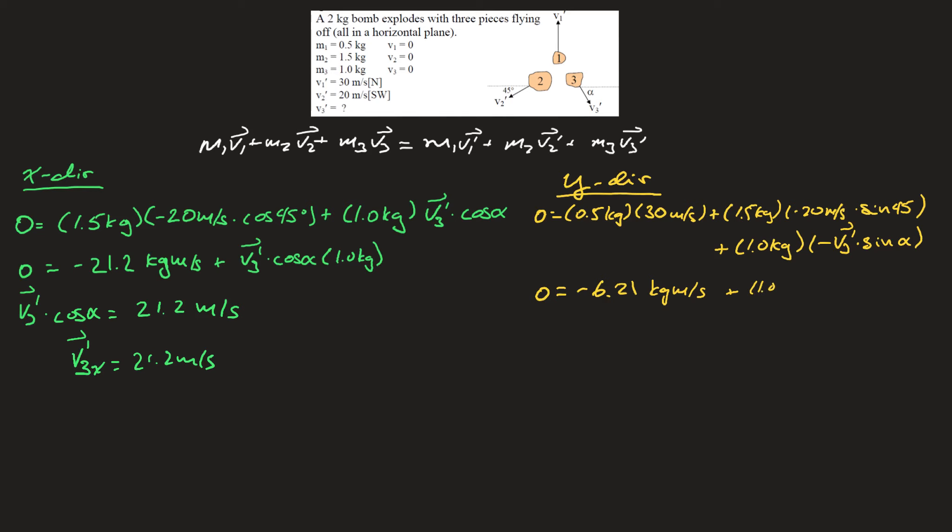Plus 1 kilogram times negative v3 prime times sine alpha. This means that v3 prime times sine alpha is equal to negative 6.21 meters per second.